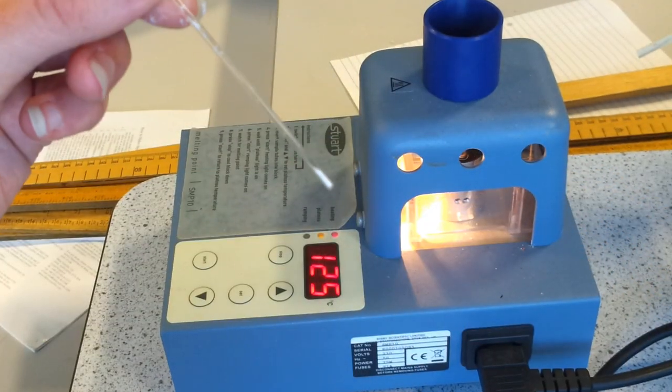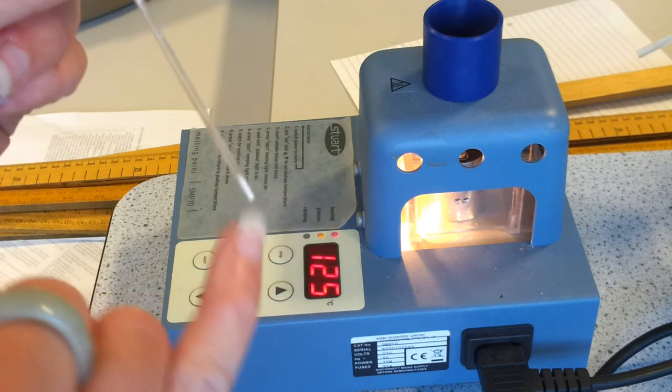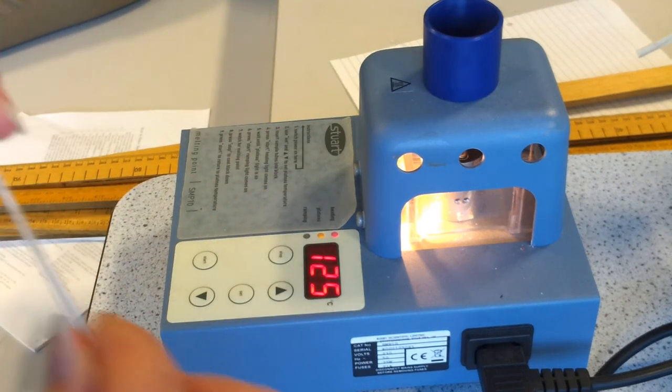There we go, you can just about see white powder at the bottom now, so that's our aspirin at the bottom of the capillary tube.